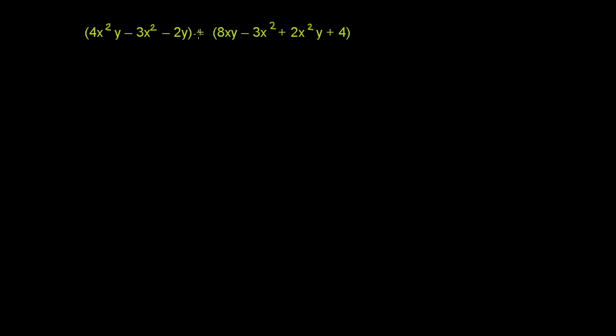Let me rewrite it. Since we're adding this second expression in parentheses, we can actually get rid of those parentheses. We can essentially distribute that positive sign. So we get 4x squared y minus 3x squared minus 2y plus 8xy minus 3x squared plus 2x squared y plus 4.